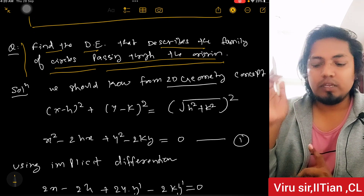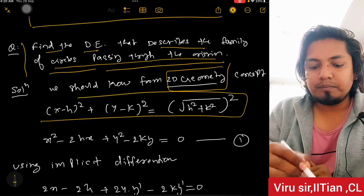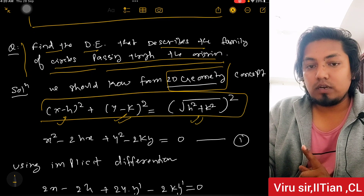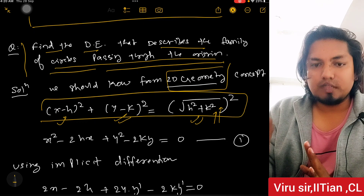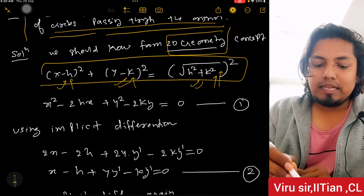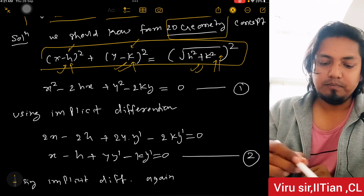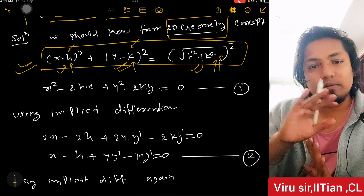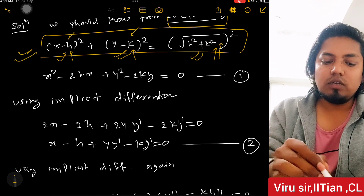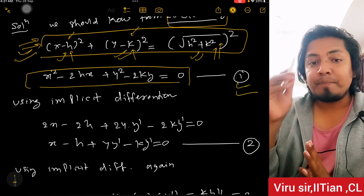The equation is (x-h)² + (y-k)² = h² + k², where h and k are two arbitrary constants. Since there are two arbitrary constants, we must differentiate two times. First, expand the equation: x² - 2hx + y² - 2ky = 0. This is equation 1, which is in implicit form because x and y terms are mixed together.